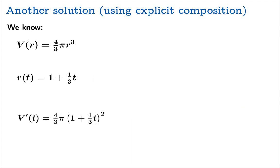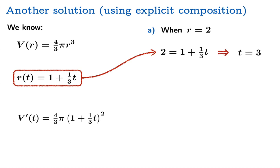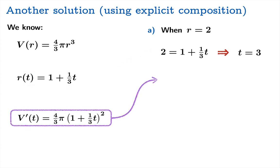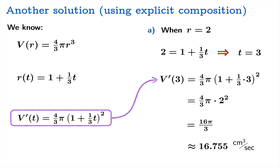So we have our derivative explicitly as a function of t, and now we need to answer our questions. So the first question is, find v prime of t when r equals two. Once again, we have a bit of a mismatch. So we need to use this equation to figure out the correct value of t. We're going to set one plus one-third t equal to two. We're going to find out that t equals three. Now we can evaluate v prime of three. It's 16 pi over three, just like we saw before.